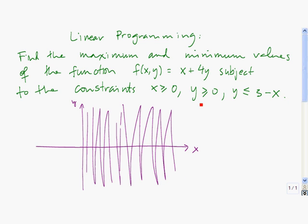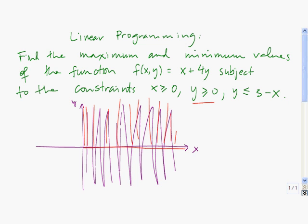Now let's move on to y is greater than or equal to zero. y equals zero is the x-axis, and y is greater than zero means everything above it. So we're looking for the x-axis and everything above the x-axis, and that's the portion that's satisfied by the second inequality.